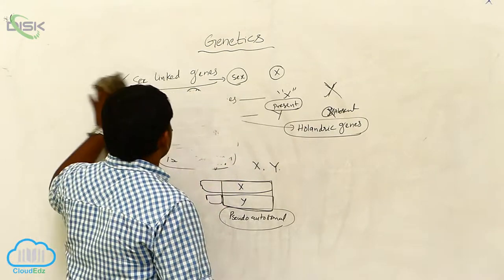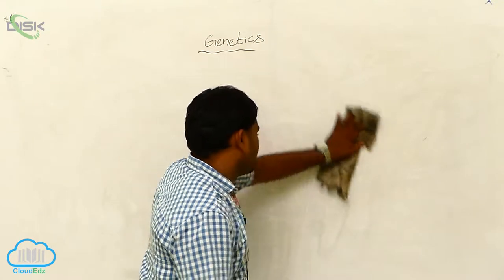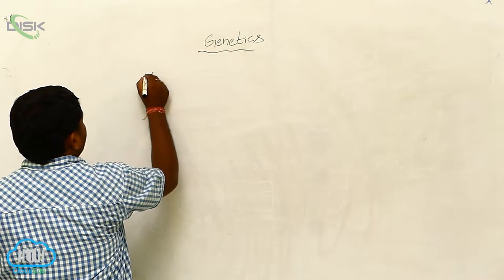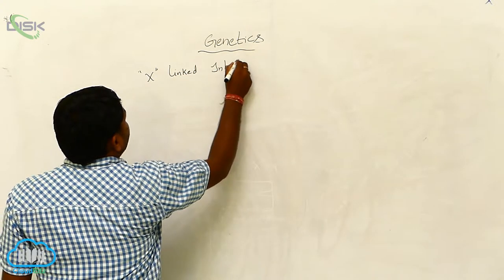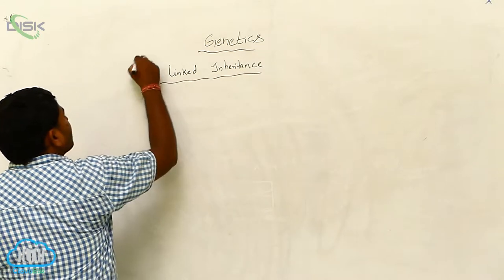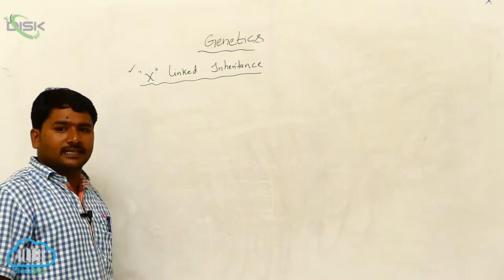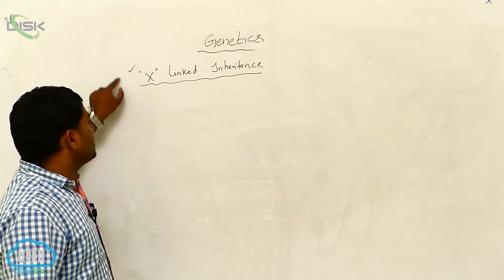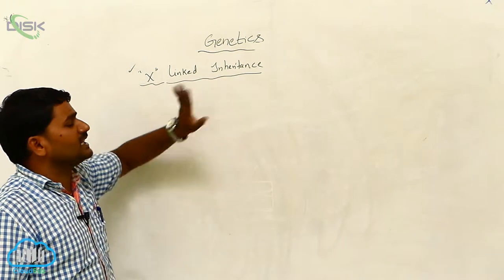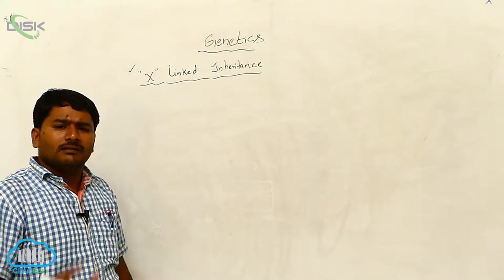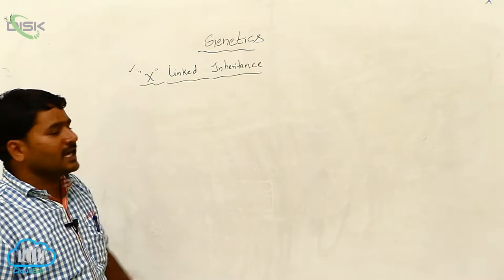Next, let us see X-linked inheritance. The inheritance of a character decided by a gene present on the X-chromosome is called X-linked inheritance. In other words, the inheritance of a character which is decided by a gene located on the X-chromosome is called X-linked inheritance.